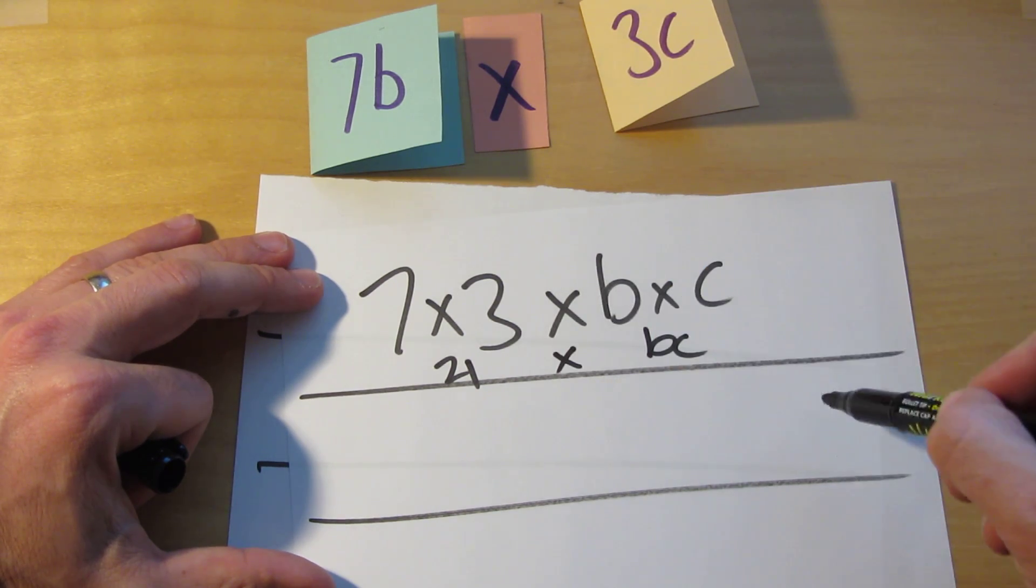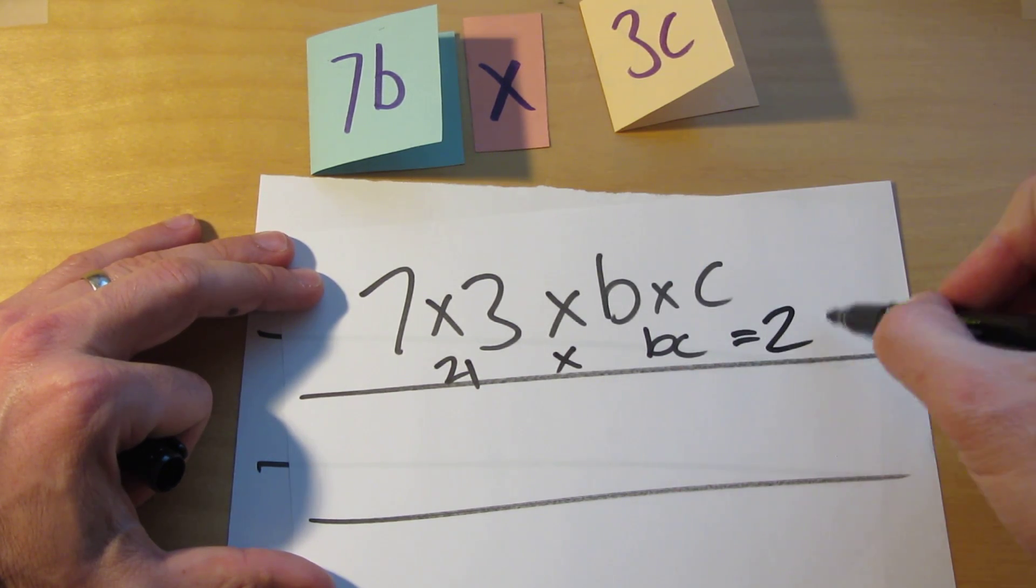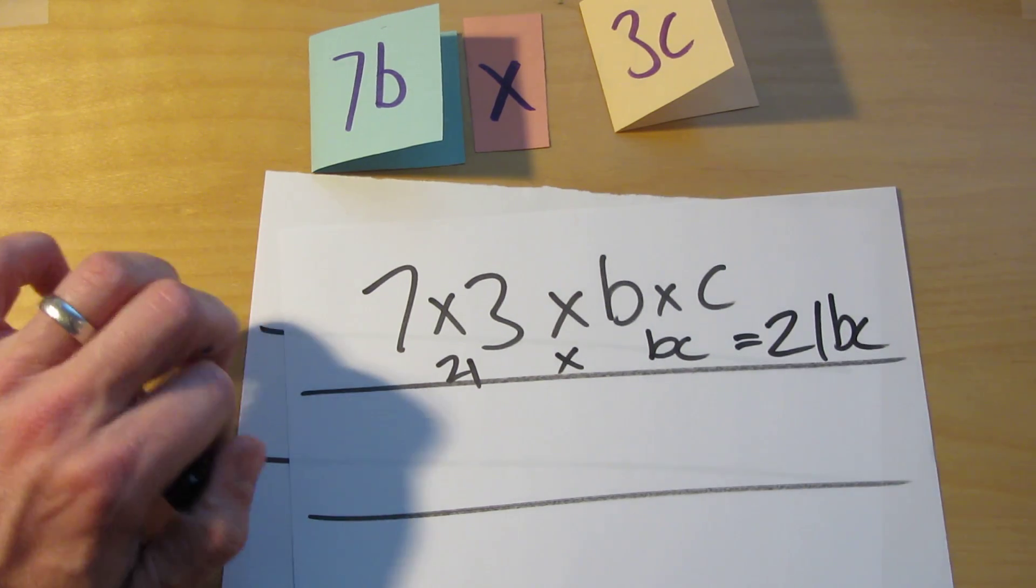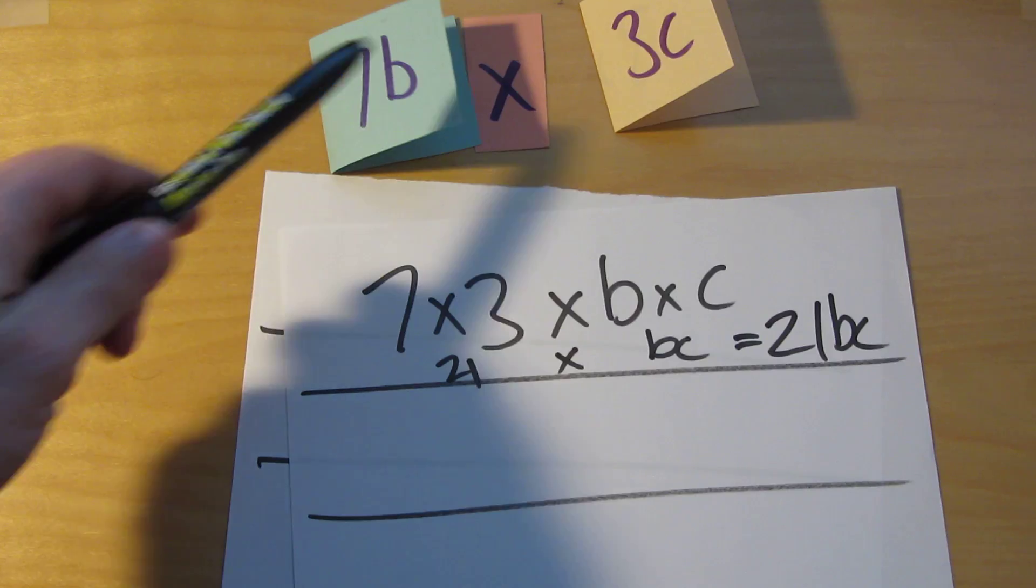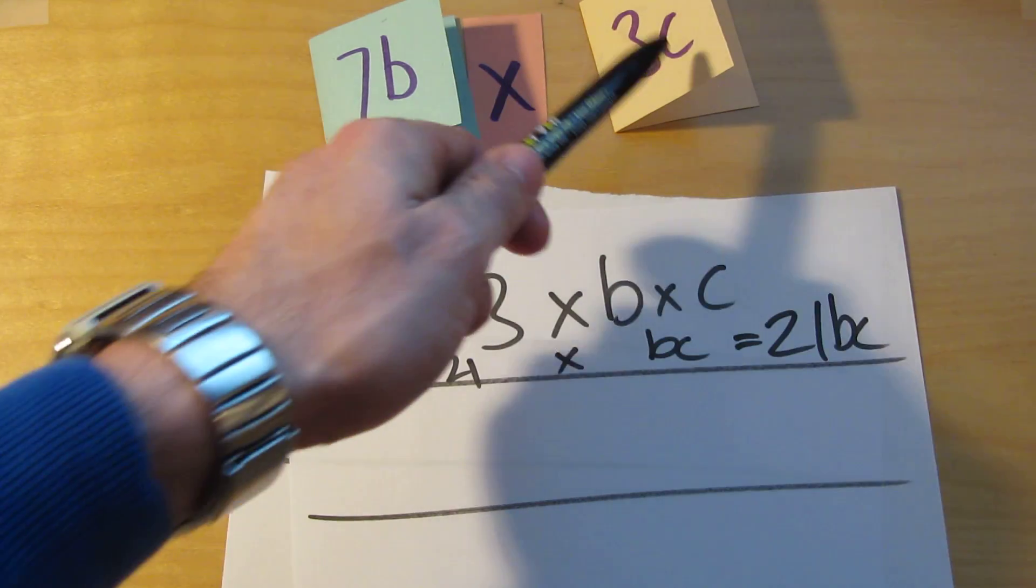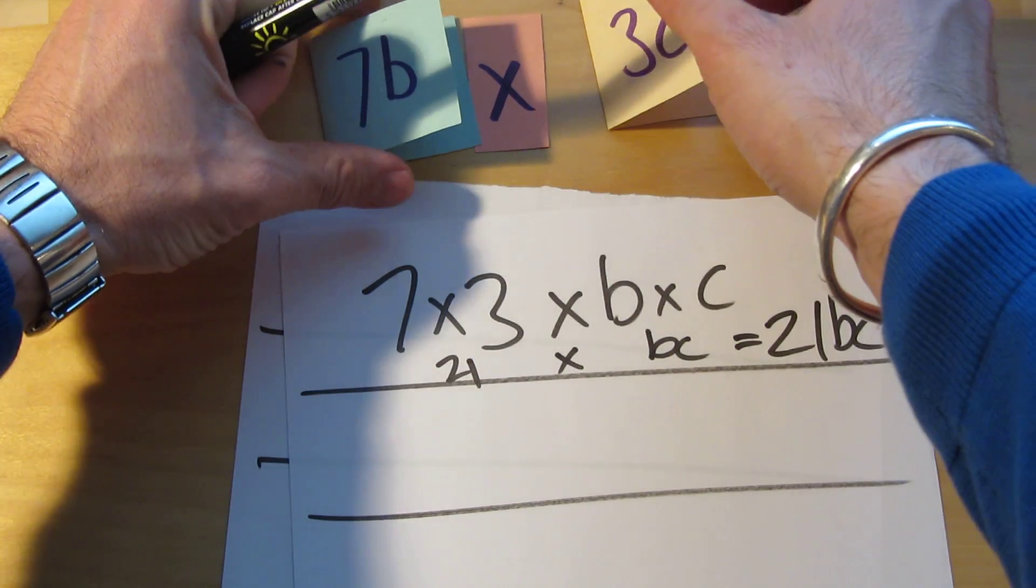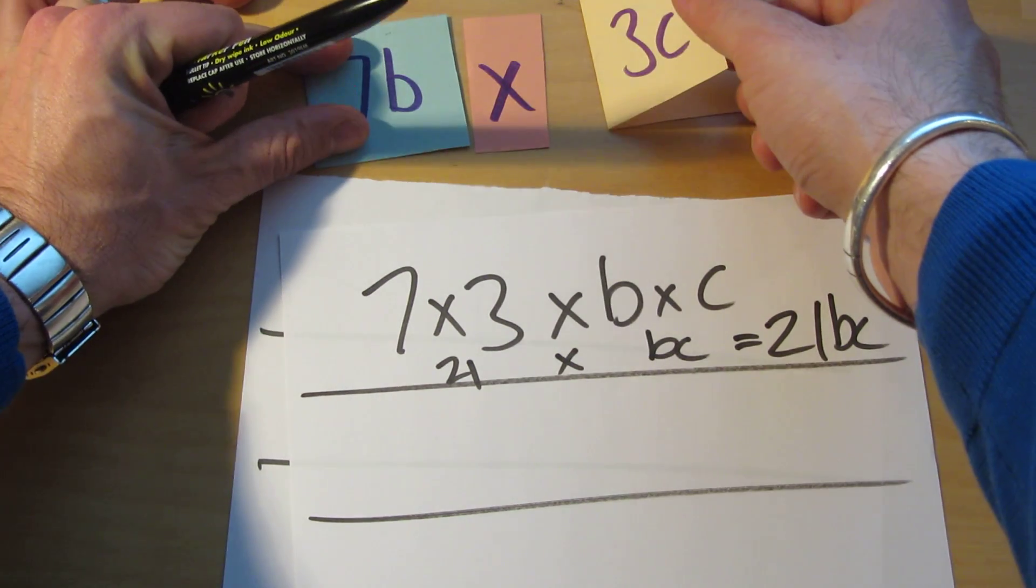And then we've got 21 times bc which is 21bc. What you've probably spotted is a short way to do it, which is just to times the coefficients together and then times the variables together. And you're done.